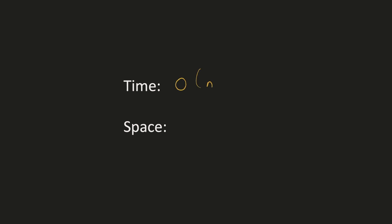The time complexity would be O(n) — we have to go through the array once to calculate the frequency, and then loop over the key-value pairs to get our answer. The space complexity would be O(n) because we are using a hash map to store the frequencies.